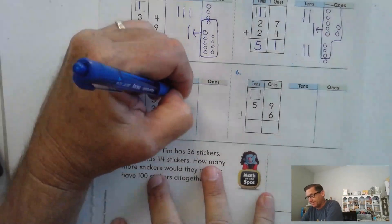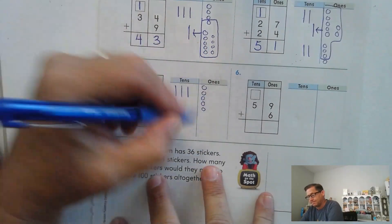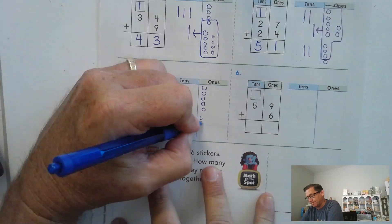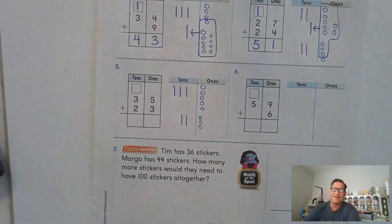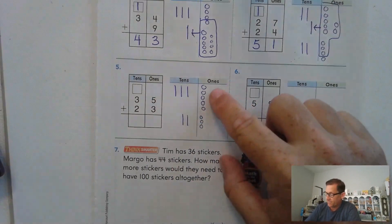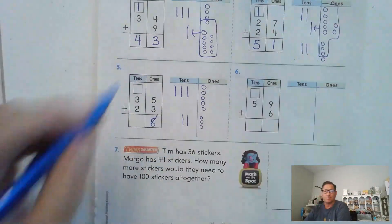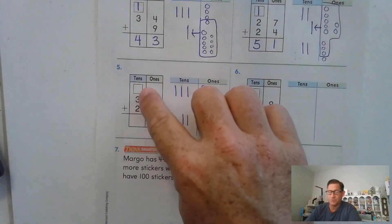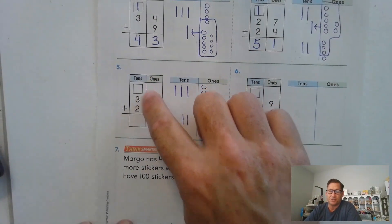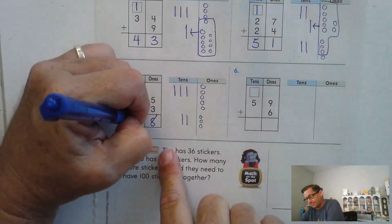35 plus 23. Are there any ones that need to be regrouped as a 10? Well, five and three is only eight ones. So no, there aren't any tens. So I'm not going to trade. I don't have any tens to trade. So we just have three plus two, five.